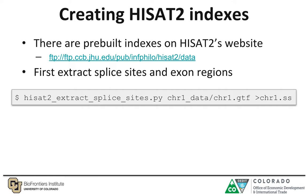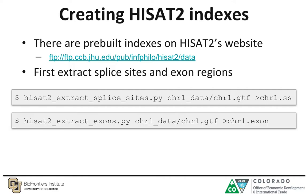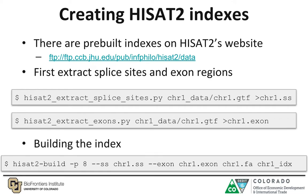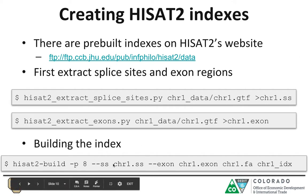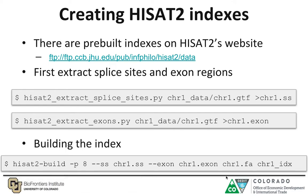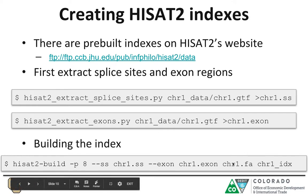The first step before building your index is to extract splice sites and exon regions. To do so, you use two Python scripts provided with the HISAT2 program: "hisat2_extract_splice_sites.py" and "hisat2_extract_exons.py". Once you've extracted exons and splice sites, you build the index using the HISAT2-build command, specifying your splice sites with the "--ss" flag and your exons with the "--exon" flag. You also provide the FASTA file and the base name for the indexes you want to build.